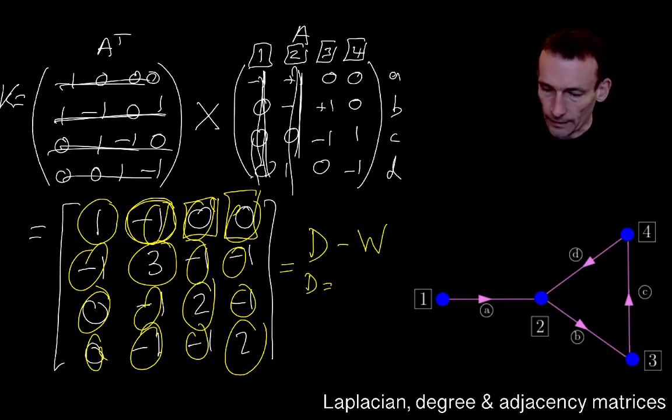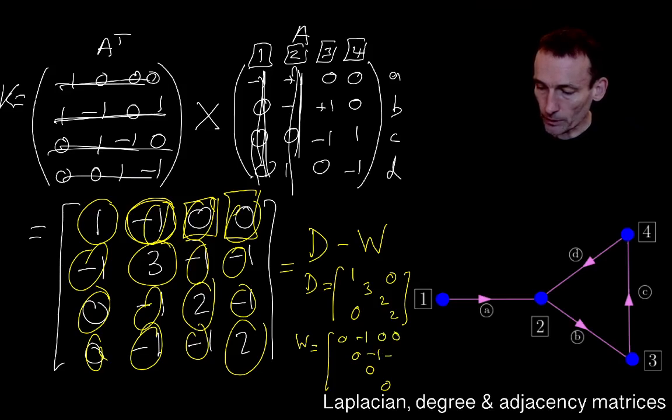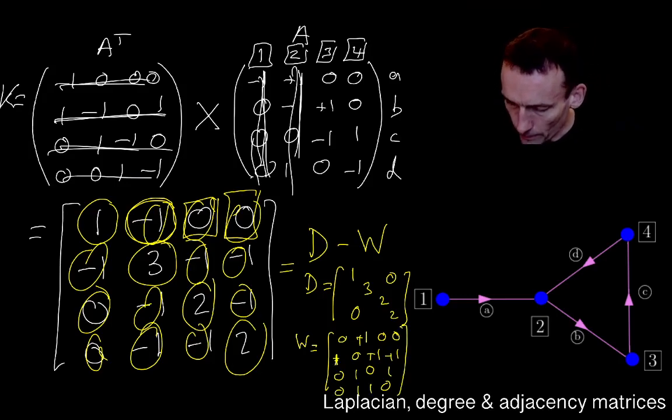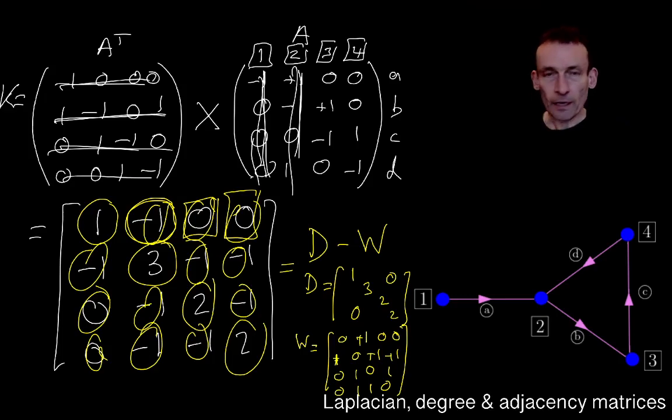Where D is one, three, two, two with zeros everywhere else. And W is zeros on the diagonal, and then minus one, zero, zero, minus one, minus one. Oh no, remember I put the minus sign out. So there's all just ones in here. I deliberately took out the ones, the minus sign I mean. I think that's right.